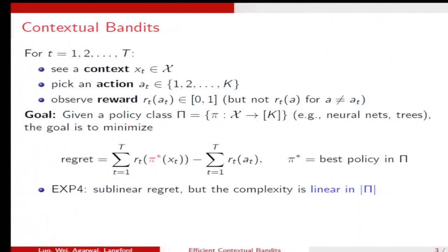To achieve sub-linear regret, the classic algorithm for contextual bandit is EXP4. But the computational complexity is linear in the cardinality of pi, which is not good because this is often exponentially many.